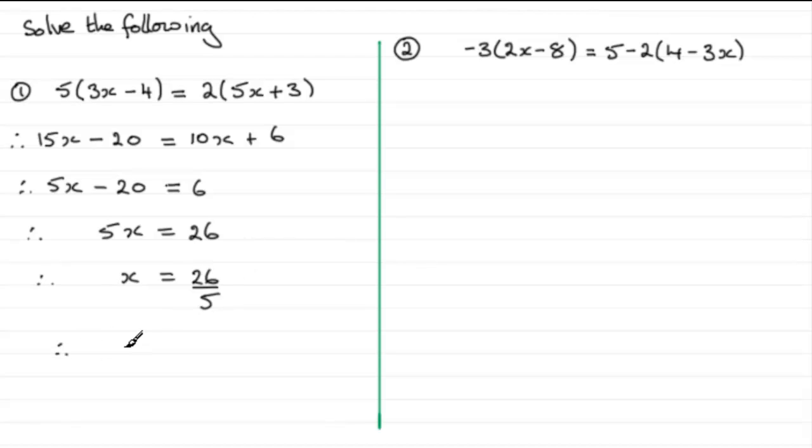Change this to a mixed fraction. x would equal in this case 26 divided by 5. 5 to go into 26 five times and then there'll be one left over and that'd be 1 fifth. 5 and a fifth okay.